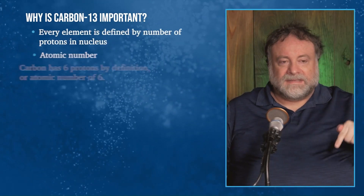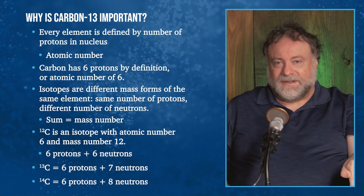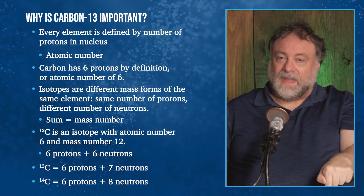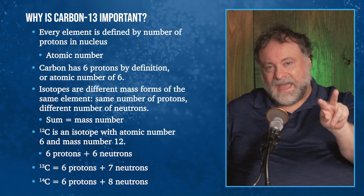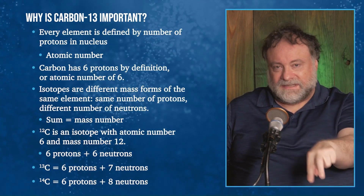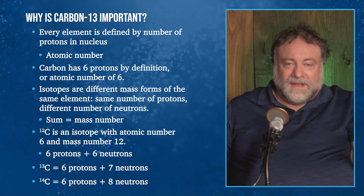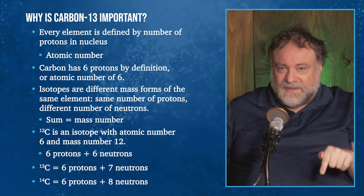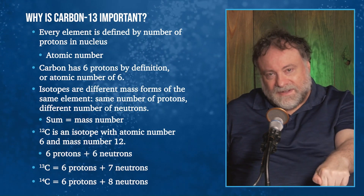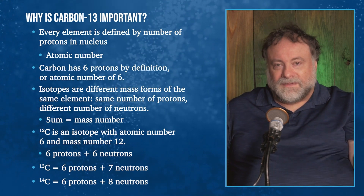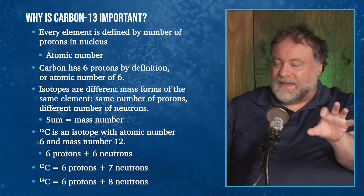There's also carbon-13, which is another type of carbon — about one in every 109 carbon atoms. Every element with 6 protons is carbon. Most carbon has 12 neutrons, so 6 plus 6 is 12 — that's carbon-12. About one in every 109 is carbon-13, which has 6 protons and 7 neutrons. Carbon-14 has 6 protons and 8 neutrons.